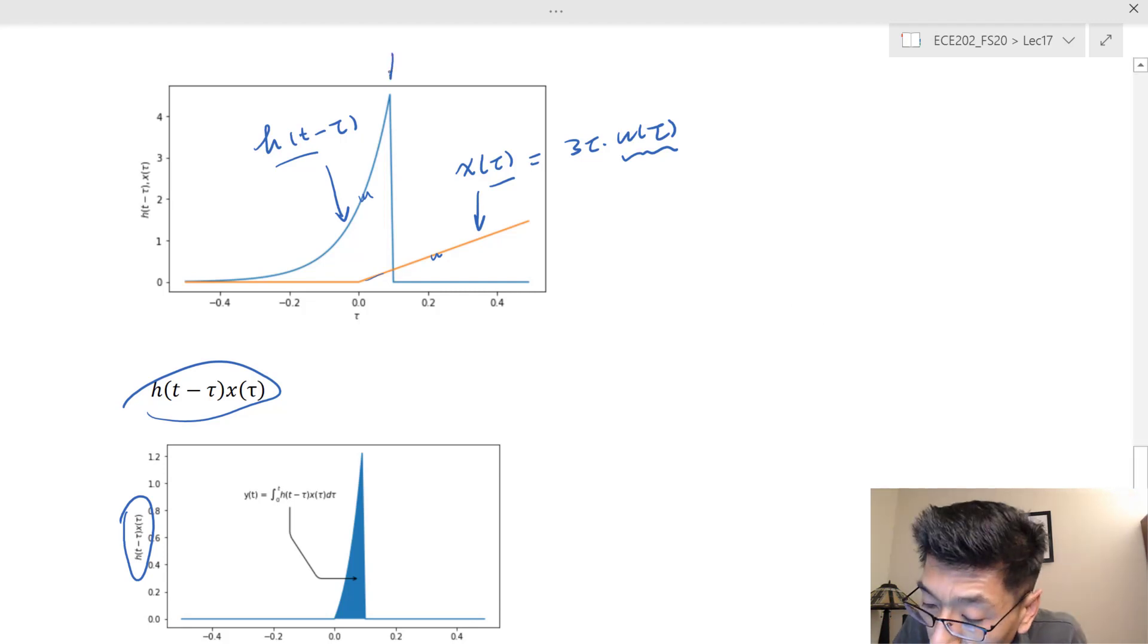The weighting factor is in a way that this is the t, and this is the t. As the t moves, the h(t minus tau) is going to go to the right, move to the right.